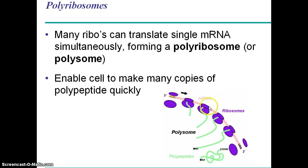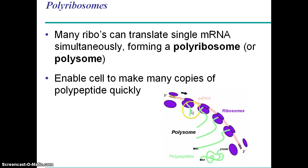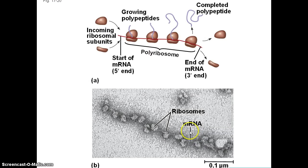You have a single messenger RNA, and you can actually pull that RNA through a number of ribosomes at the same time, so you can make many polypeptides using a single messenger RNA. This structure — this complex of multiple ribosomes along a messenger RNA — is called a polyribosome. It allows you to make a lot of protein very fast. Here you can see actual images of the messenger RNA being pulled through all these ribosomes, making multiple polypeptides.